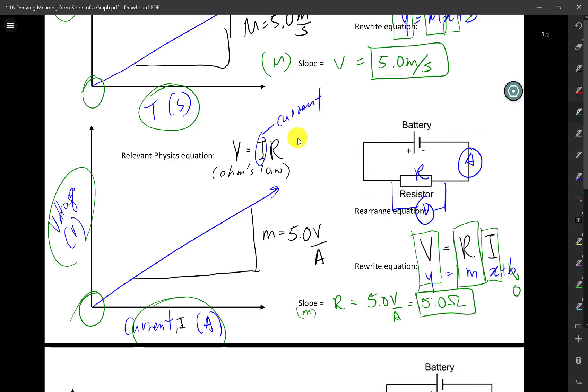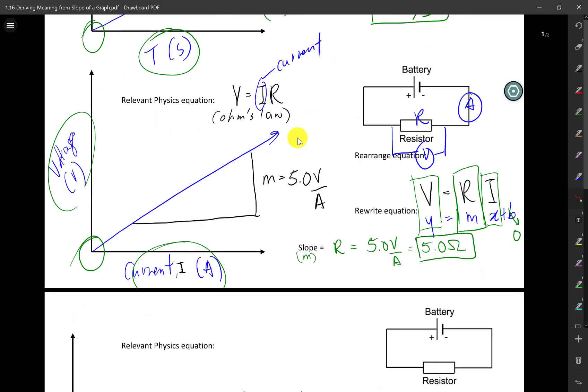Again, the slope of your graph means something significant in terms of from a relevant physics equation. And of course, if you know what the actual resistance used in a lab was, you can compare with your own findings and see if there's a discrepancy. And if there is, or if there's not, that's plenty to talk about in your lab report. I will go on to the next example.